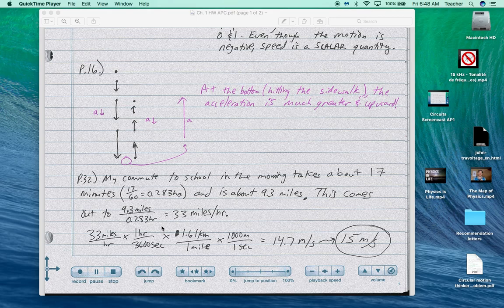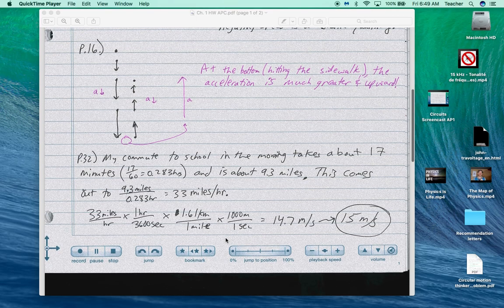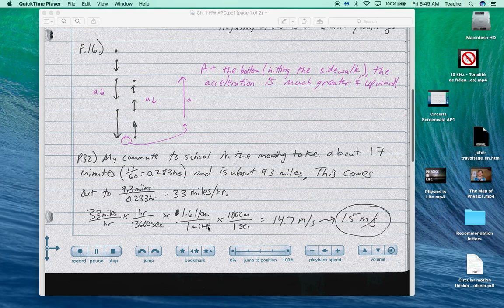At any rate, so miles per hour times one hour over 3,600 seconds times 1.61 kilometers over one mile times 1,000 meters over one second, we'll have 15 meters per second. There's other ways you could do that than just this. You could convert hours to minutes, minutes to seconds. You could convert kilometers or meters to miles directly, 1,610 meters per mile.